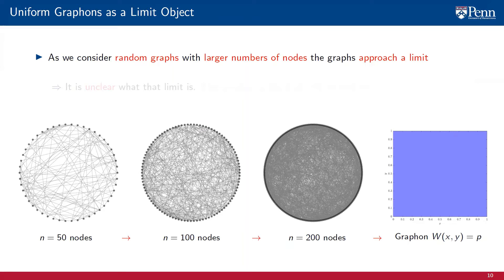In the figure, we consider random graphs with increasing number of nodes. It is clear that as the number of nodes grows, the graph is approaching some sort of limit. But it is unclear what that limit is. We will see in this lecture that the graphon is the limit. That the graphon is introduced to formalize the notion of convergent graph sequences.